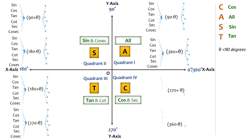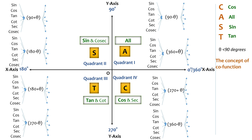To handle all these difficult-looking angles, only two things need to be kept in mind. The first is the concept of co-functions in trigonometry: sine is the co-function of cos and vice versa; tan is the co-function of cot and vice versa; and sec is the co-function of cosec and vice versa.